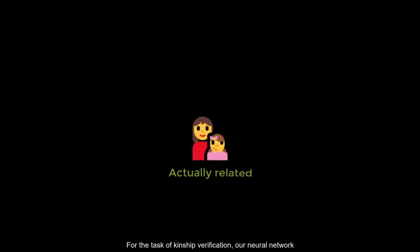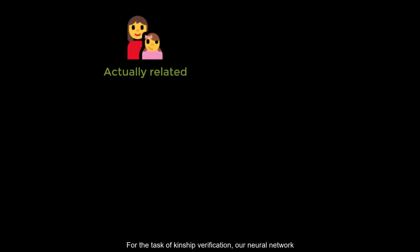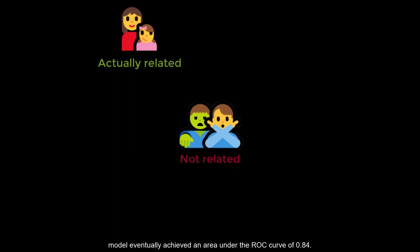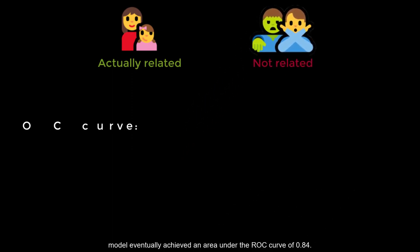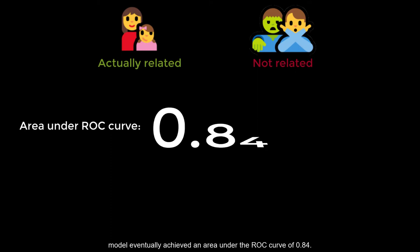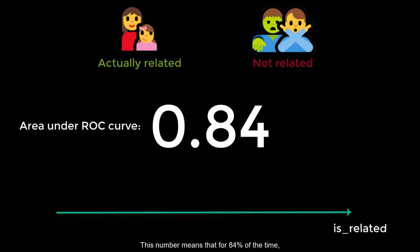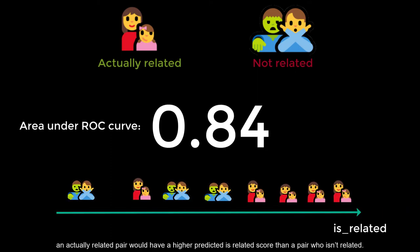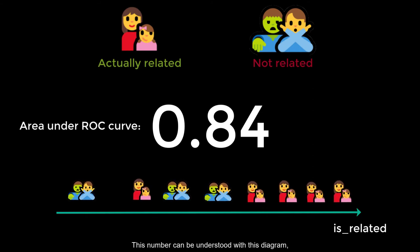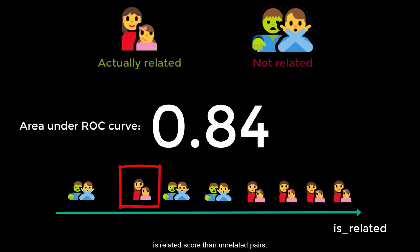For the task of kinship verification, our neural network model eventually achieved an area under the ROC curve of 0.84. This means that for 84% of the time, an actually related pair would have a higher predicted is-related score than a pair who isn't related. This can be understood with this diagram, where only 1 out of 5 related pairs had a lower predicted is-related score than unrelated pairs.